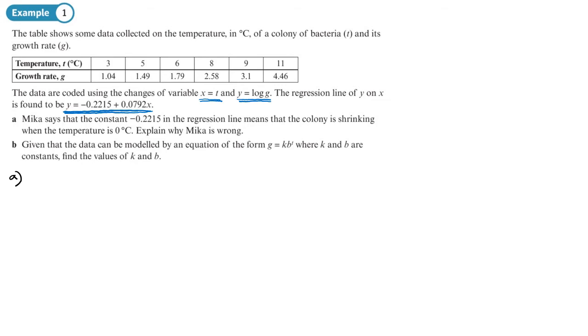Let's work out the growth rate. The growth rate is g. So we need to look at what's g when the temperature is 0. The temperature is 0. Now I'm using the information at the top. That means x is 0. So let's put 0 into the equation. Remember what we're trying to do is to find out what g is. What that will leave me with is y equals minus 0.2215. But remember we're trying to find a growth rate and it says y is equal to log g. So if y equals that, then log g equals that.